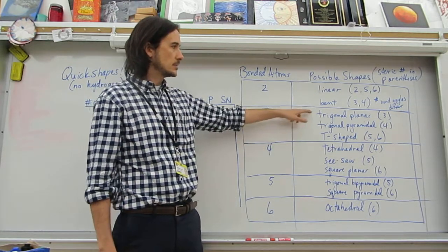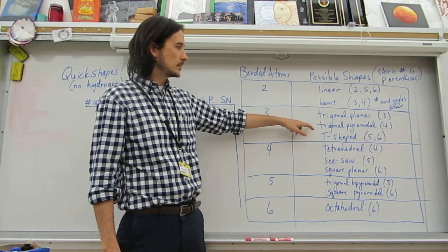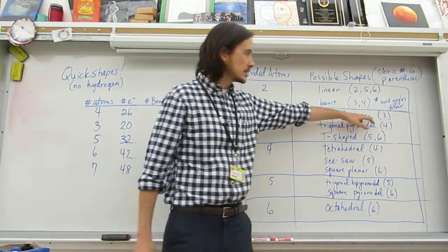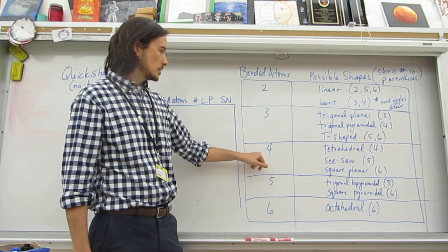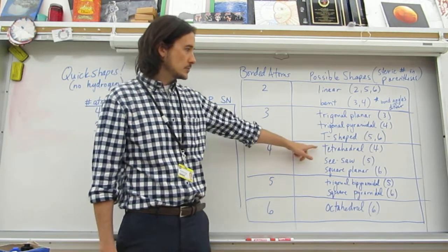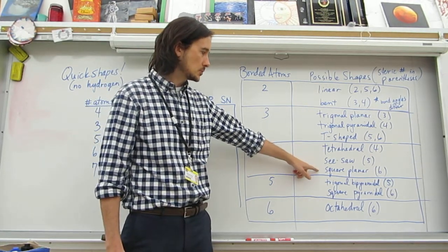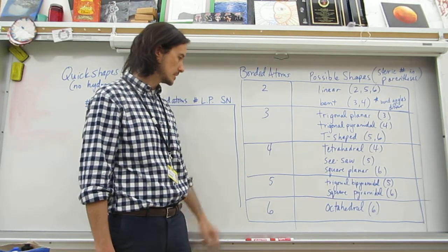If you have three bonded atoms, it's either trigonal planar, trigonal pyramidal, or T-shaped. Steric numbers 3, 4, or 5, and 6. Four bonded atoms is either tetrahedral, seesaw, or square planar for steric numbers 4, 5, and 6.